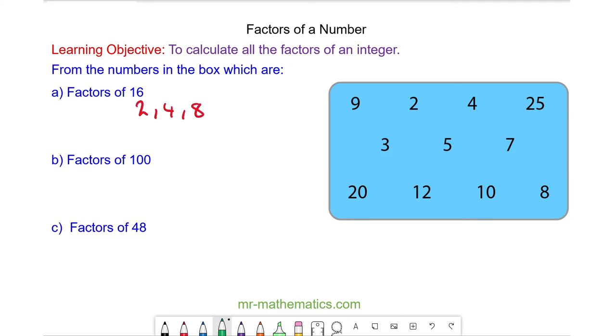The factors of 100 are 2 times 50, 4 times 25, 25 times 4, 20 times 5 and 10 times 10.